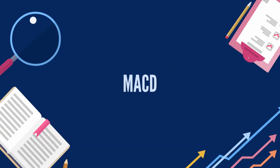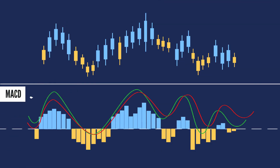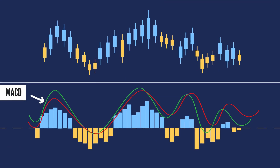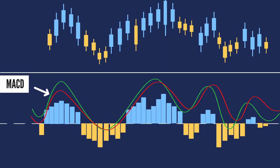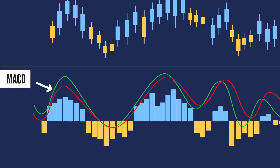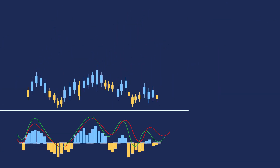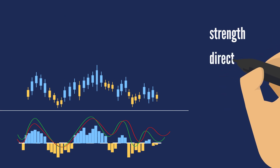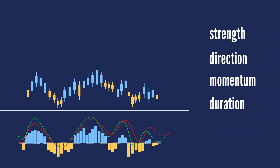MACD, short for Moving Average Convergence/Divergence, is a trading indicator used in technical analysis of stock prices. It is designed to reveal changes in the strength, direction, momentum, and duration of a trend in a stock's price.